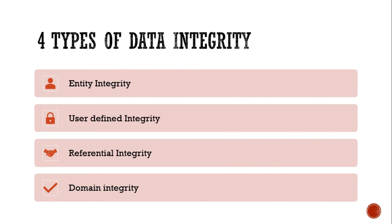There are four types of data integrity. First is entity integrity. Second is user-defined integrity. Third is referential integrity, and the last is domain integrity. Let me explain all four one by one.